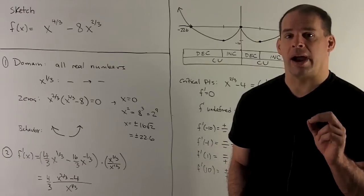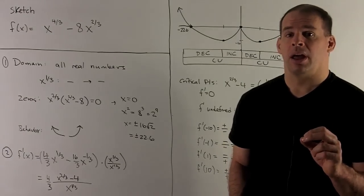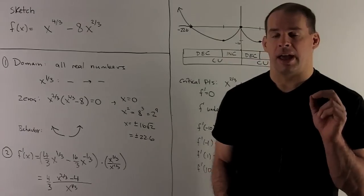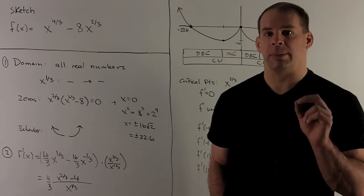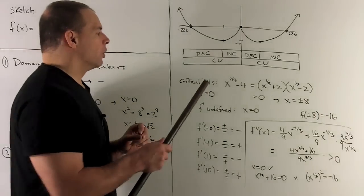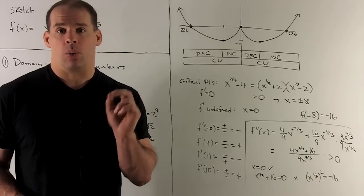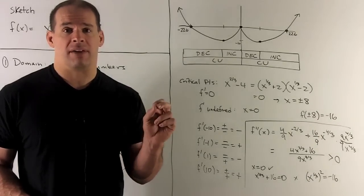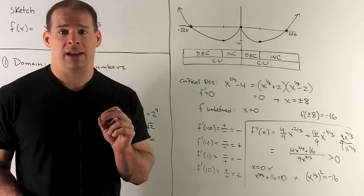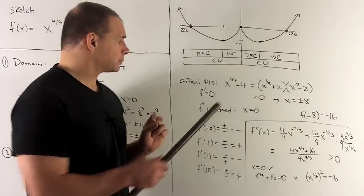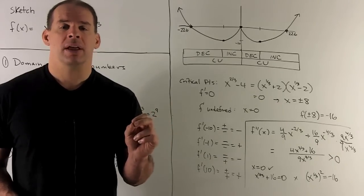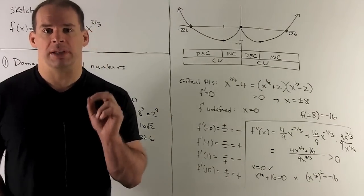Critical points occur where the derivative is undefined or equal to 0. Dividing by 0 gives a critical point at x = 0. For the numerator, solve x^(2/3) - 4 = 0. Let y = x^(1/3); then y² - 4 = 0 factors as (y+2)(y-2), giving x^(1/3) = ±2, so x = ±8. Note: if you raise both sides to the 3/2 power directly, you lose the negative solution, so we must be careful.